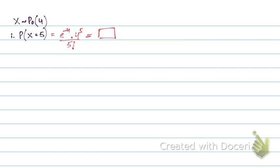In another example, let's say we need probability of x less than or equal to 2. This will be the probability of 0, plus probability of 1, plus probability of 2. You calculate each probability and simply add all these probabilities up. Once you add them, you will notice a pattern.